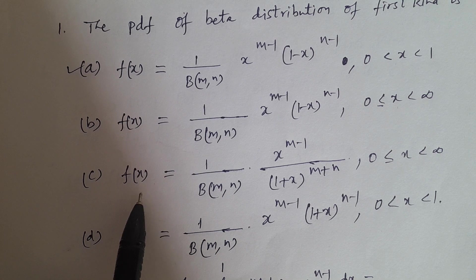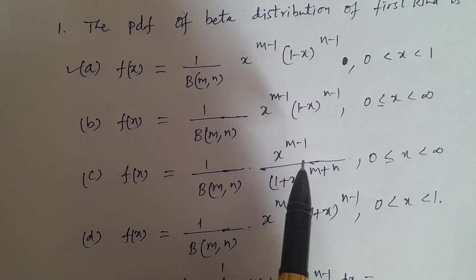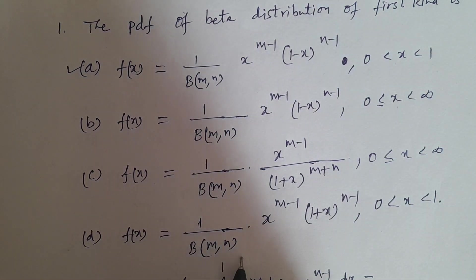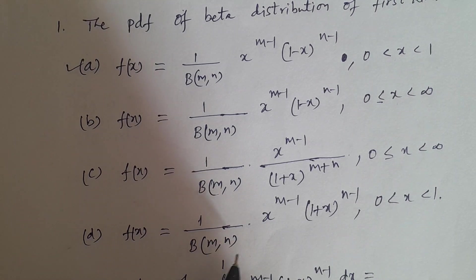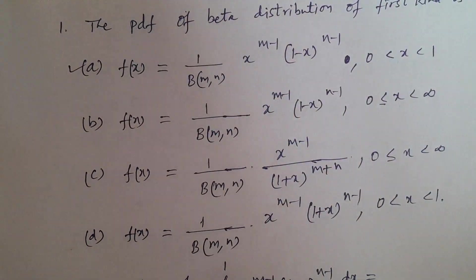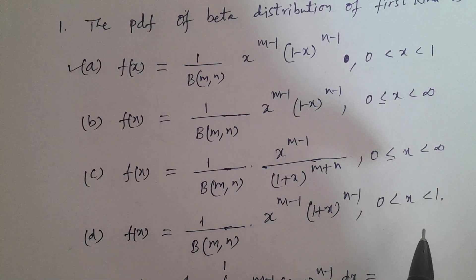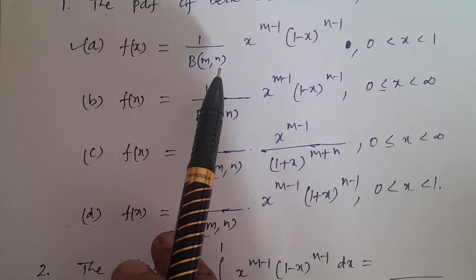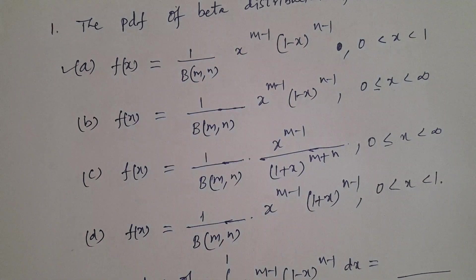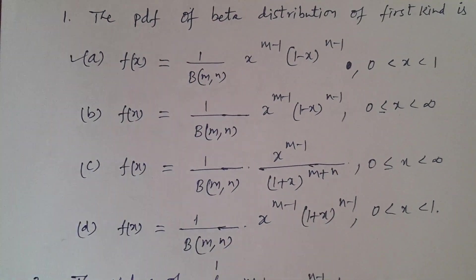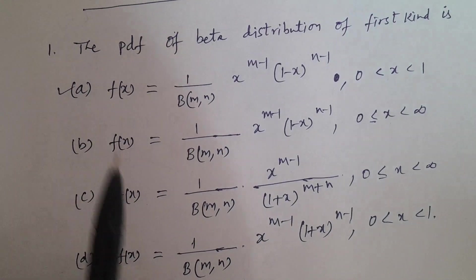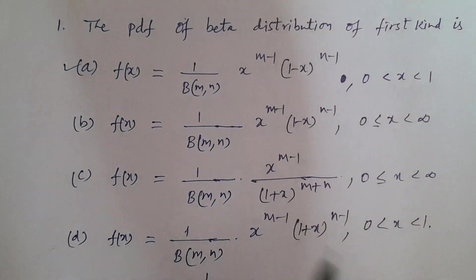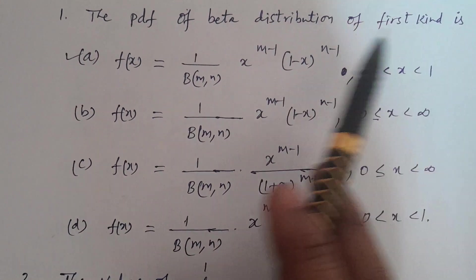Option C — f(x) = 1/β(m,n) · x^(m-1) / (1+x)^(m+n), 0 ≤ x < ∞. Option D — f(x) = 1/β(m,n) · x^(m-1) · (1-x)^(n-1). The correct answer is Option A — f(x) = 1/β(m,n) · x^(m-1) · (1-x)^(n-1).